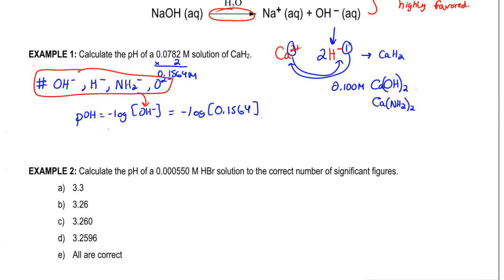When we take the negative log of this, this will give us our POH. It's going to give us 0.81 for our POH. Remember, I didn't ask for the POH, I asked for the pH.